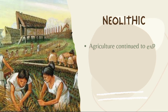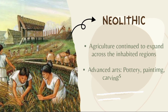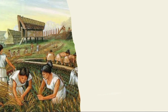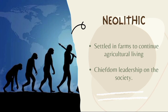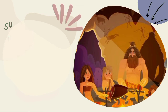Agriculture continued to expand across the inhabited regions of the world. Some settled villages learned advanced arts like pottery, more decorative wall painting, carvings, and other arts. During the Neolithic period, humans settled in farms to continue their agricultural living, and tribes became bigger until they reached a chieftain supremacy leadership under society — meaning their society was led by leaders with different rankings.